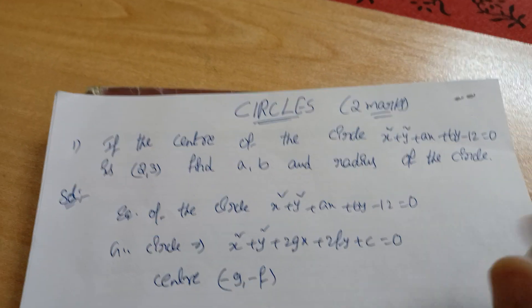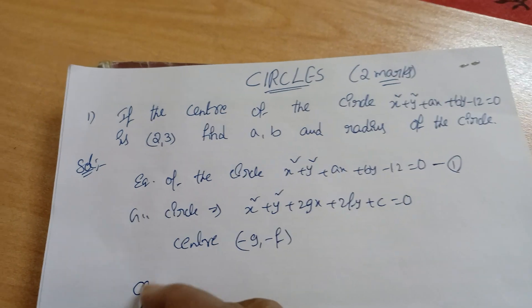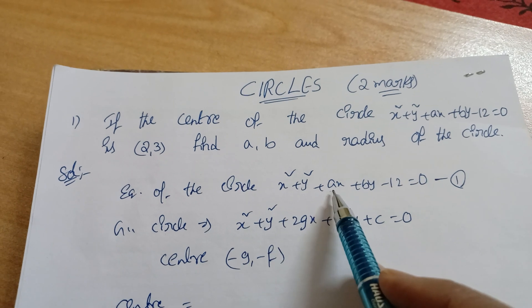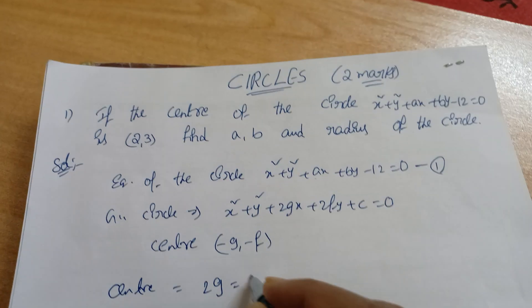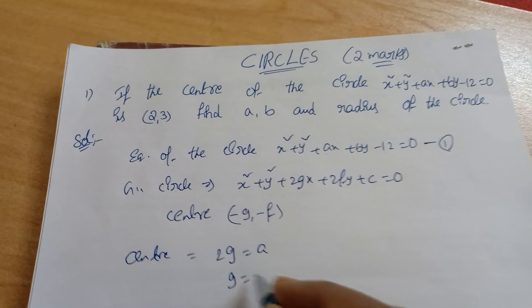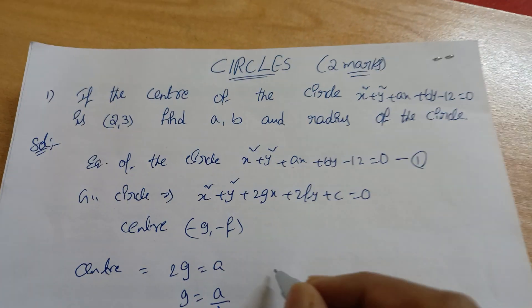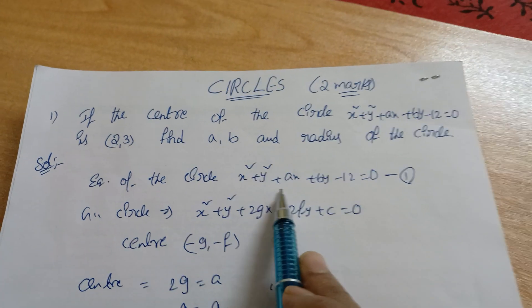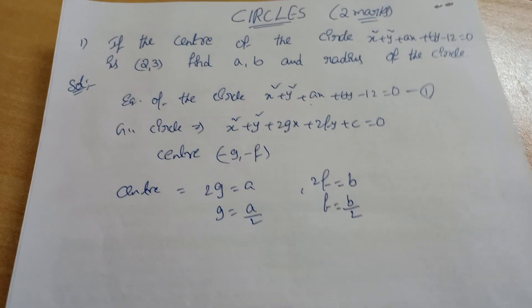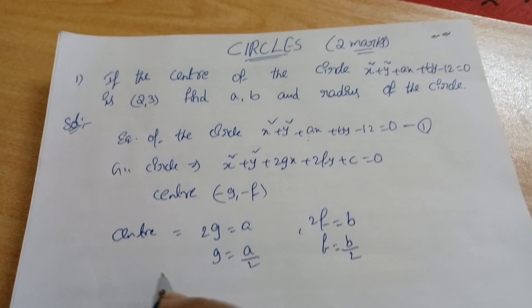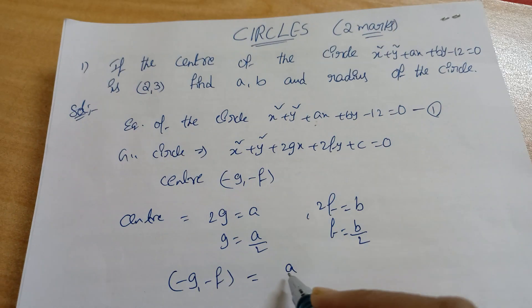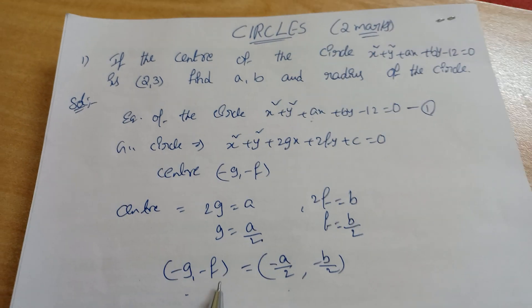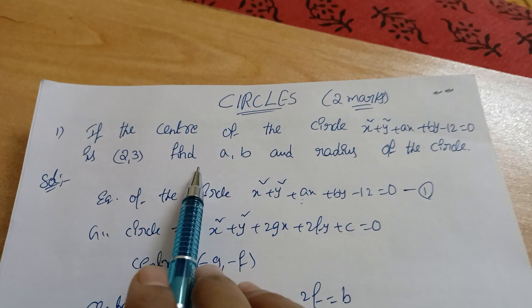Now compare them. From 2g = a, we get g = a/2. Similarly, from 2f = b, we get f = b/2. So comparing, we get g = a/2 and f = b/2. Therefore the center becomes (−g, −f) = (−a/2, −b/2).